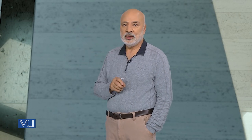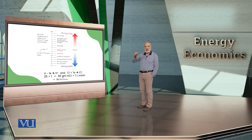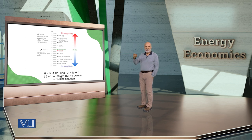So pH of 7 means neutral — not acidic. If the concentration of hydrogen is 10 to minus 3, then pH is 3. pH 3 is very much acidic, because the hydrogen ion concentration is much higher. The molar solution is also called the acidity concentration.